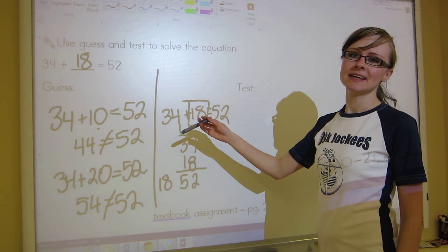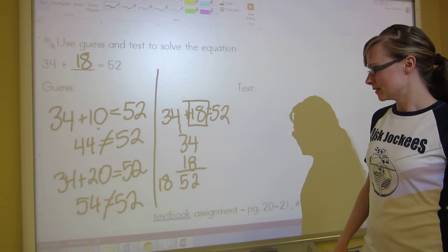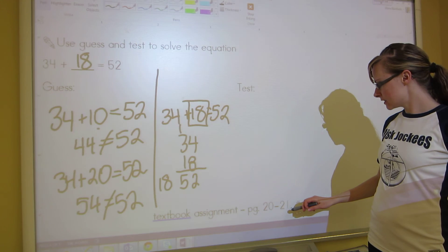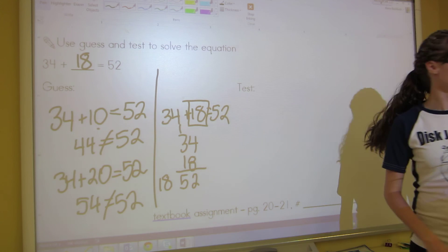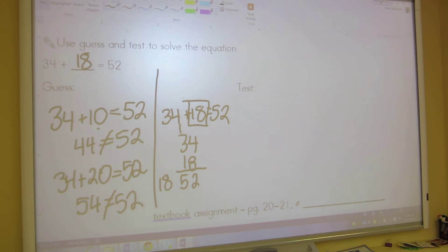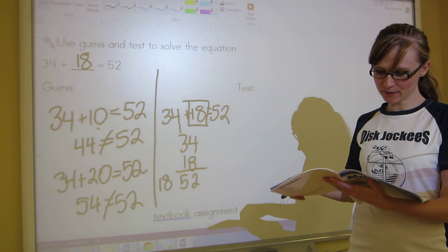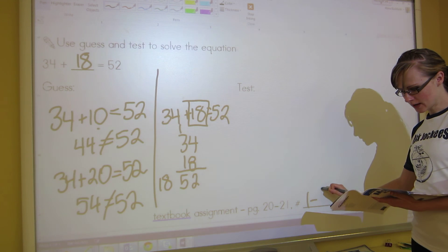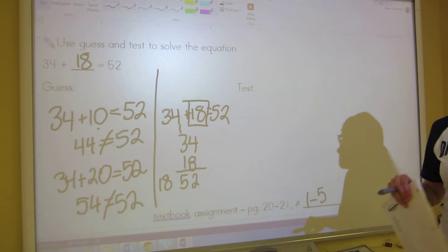I guess I did my guess and test all in one spot. I should have wrote all of this in here, but oh well. Your textbook assignment is on page 220 to 221. It's numbers one to five. And that's it. Thanks for watching.